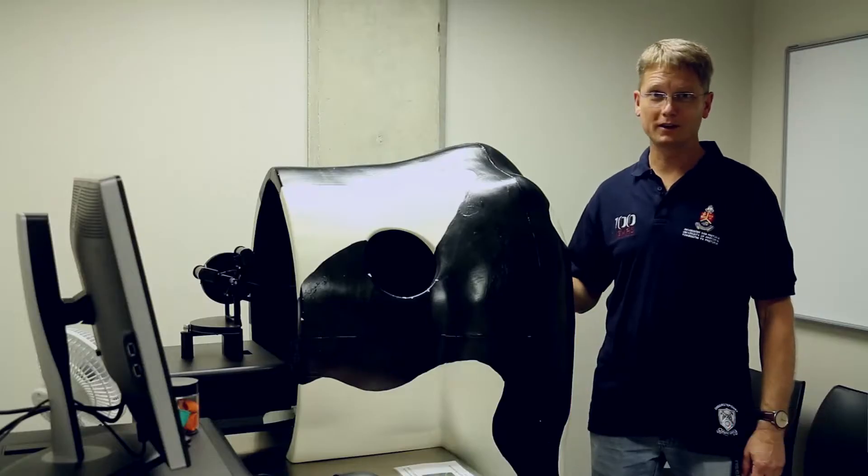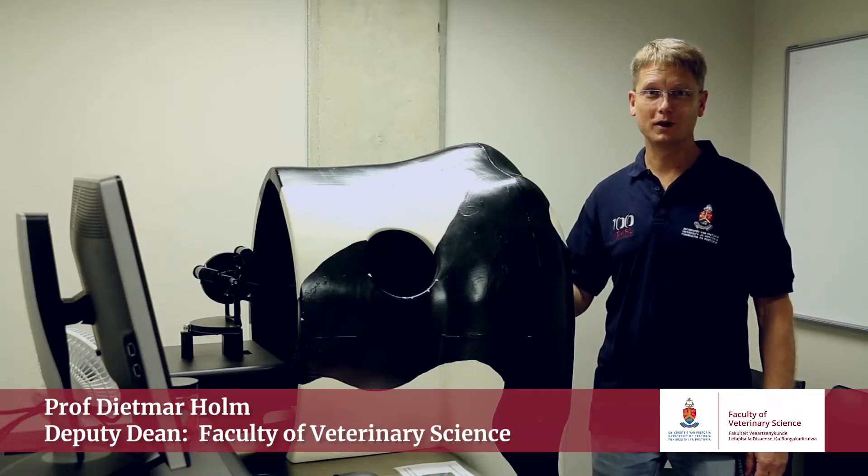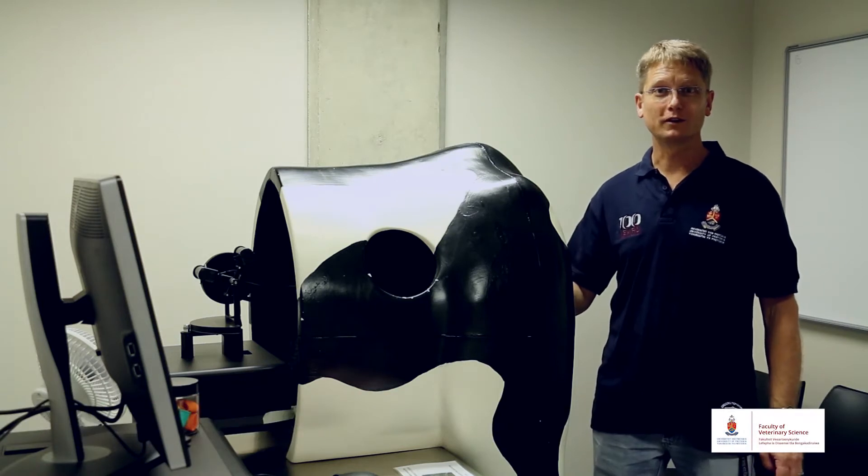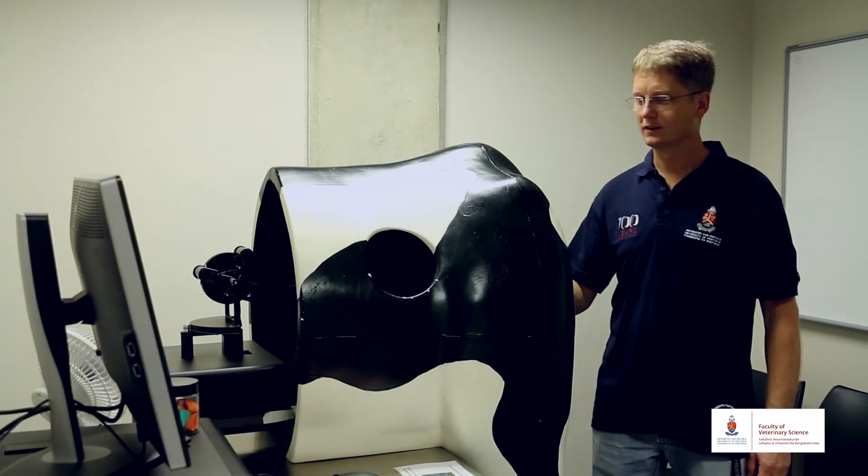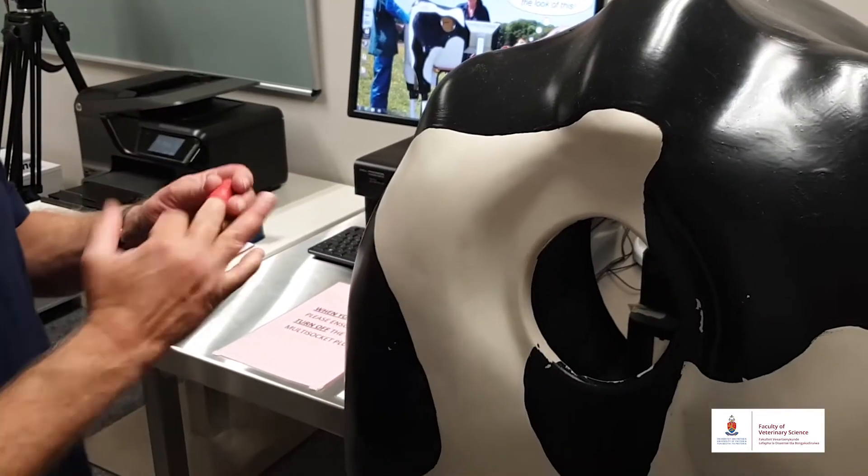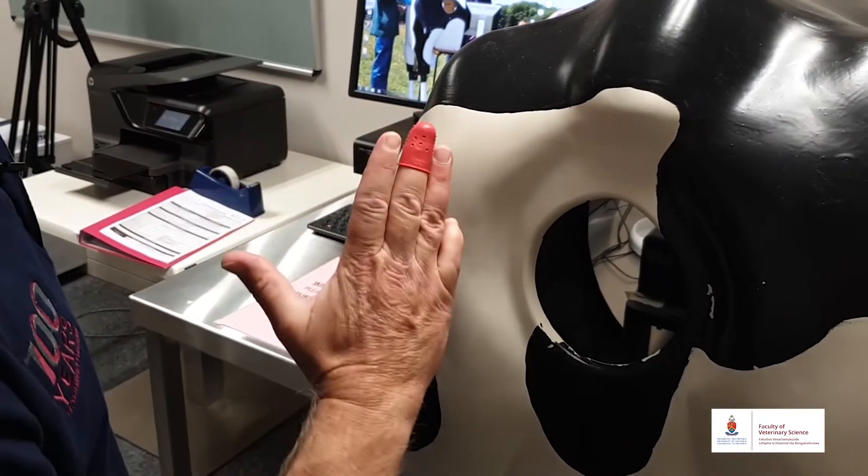This is the haptic cow model. It is the most high-tech model that we have in the Skills Lab at Onertepoort. I'm going to demonstrate how this works. So first of all I start by putting a rubber thimble on my finger and then I insert my hand into the model.